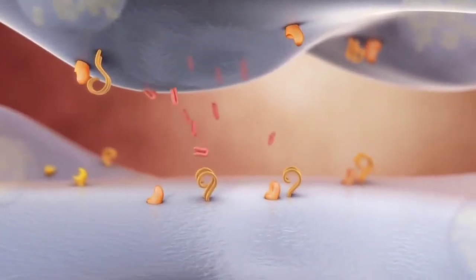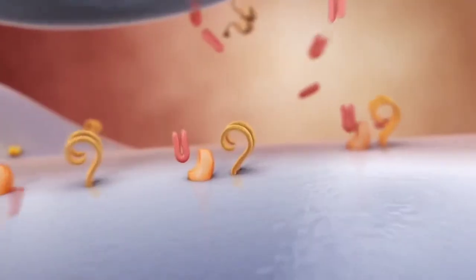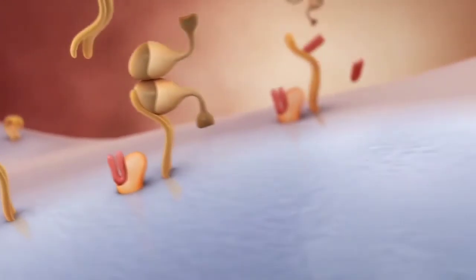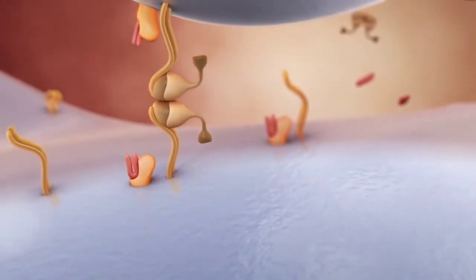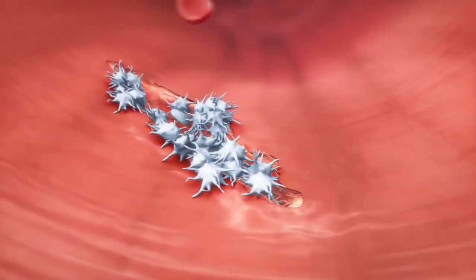Thromboxane is another important mediator of platelet activation and aggregation. Under its influence, the platelets cross-link with each other. These interlocking mechanisms cause platelet activation to snowball. The clot grows rapidly.